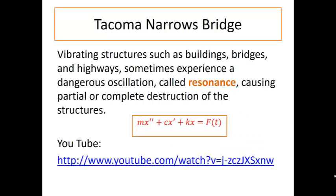And then finally, the one thing we have not yet discussed is the case where there's an external force. Vibrating structures like buildings, bridges, and highways sometimes experience a dangerous oscillation called resonance that can cause the partial or complete destruction of the structures. In this case, our mechanical vibration system has this external force. It's a non-homogeneous differential equation. This is the example of what happened in the case of the Tacoma Narrows Bridge. There's a link here you can look on YouTube to find a video. If you've never seen the Tacoma Narrows Bridge, it's definitely worth taking a look at. Also in my slides are a detailed mathematical explanation for what happened using this type of modeling system.